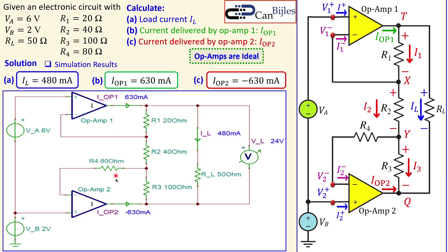Now let's look at the simulation results. This is the circuit in the simulator — Va, Vb with their values, and the two ideal op-amps. Current arrows are placed to measure Iop1, Iop2, and the load current. We have the four resistors R1, R2, R3, R4, and the load. The simulation confirms: Iop1 = 630 mA, Iop2 = -630 mA, IL = 480 mA, and load voltage VL = 24 V — all verified.